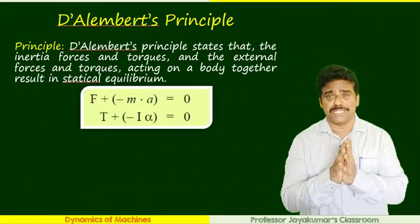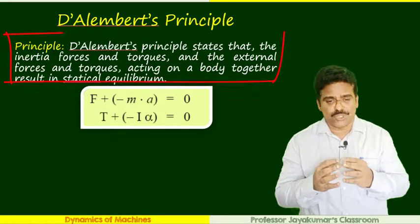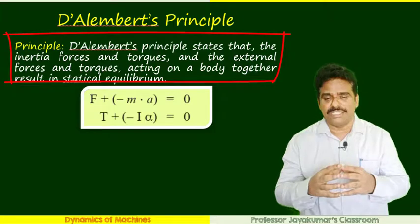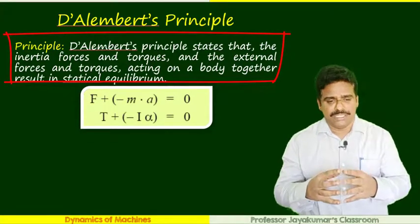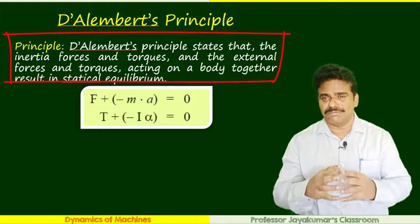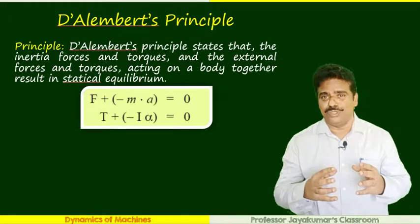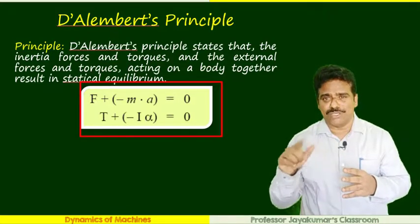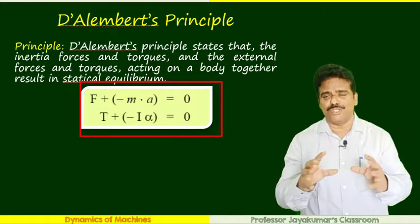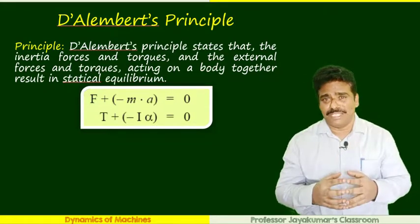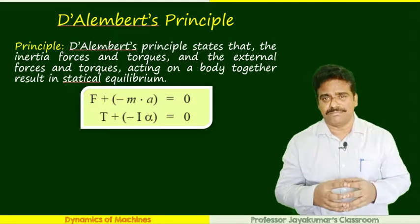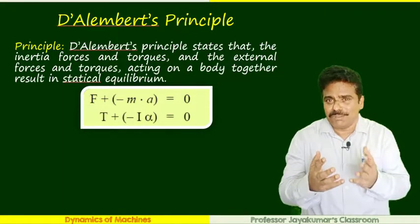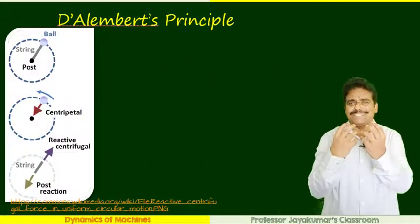Now, D'Alembert's principle. It says that the inertia forces and torques and the external forces and torques acting on a body together result in static equilibrium. How can it be written? Summation of forces minus ma equal to zero. Summation of torques minus I alpha equal to zero, which is nothing but equations of equilibrium. Let us see the difference between Newton's second law of motion and D'Alembert's principle.